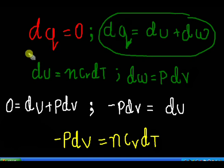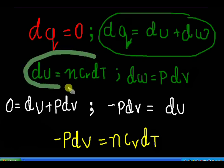We also know that DU, that is the difference in internal energy, will be equal to nCv delta T, that is specific heat times difference in temperature. This came from Qv, that is heat gained at constant volume — we know that U is equal to Qv, from that we form this relation. We know that DW is equal to pressure into volume, so we can write DW is equal to P dV as there is a change in volume.